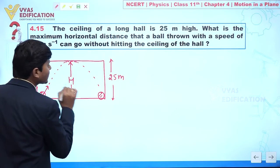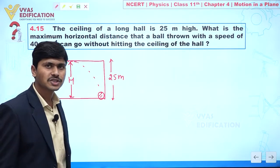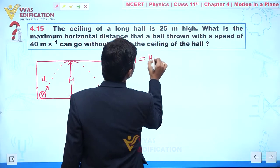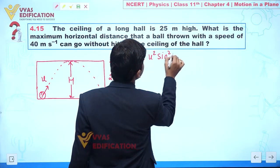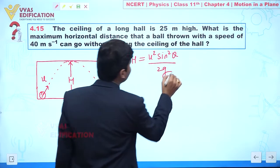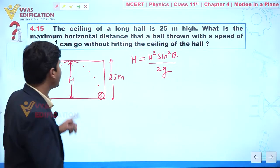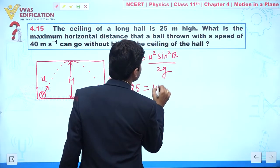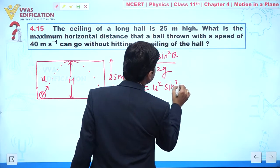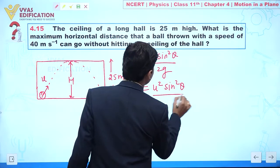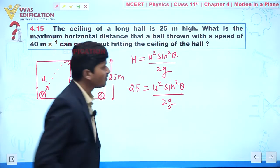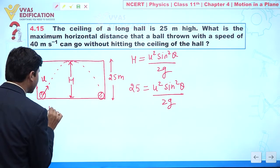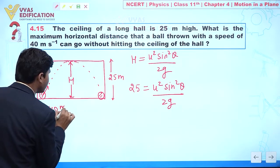This means we can say this height value is equal to the maximum height of projectile motion. So the formula is: H = u² sin²θ / 2g. The value of H is given as 25, so: 25 = u² sin²θ / 2g. The value of u is also given as 40 meters per second.